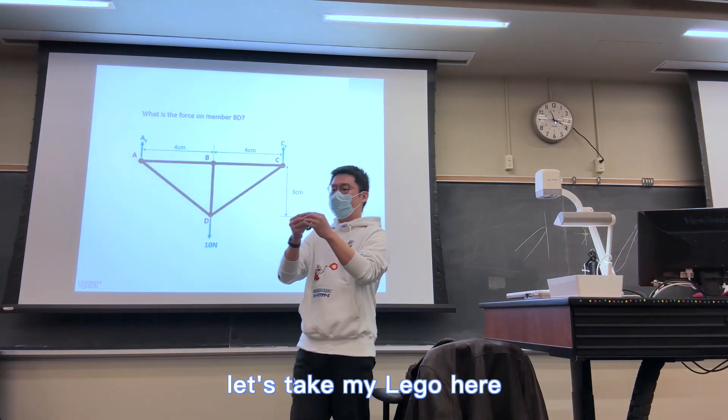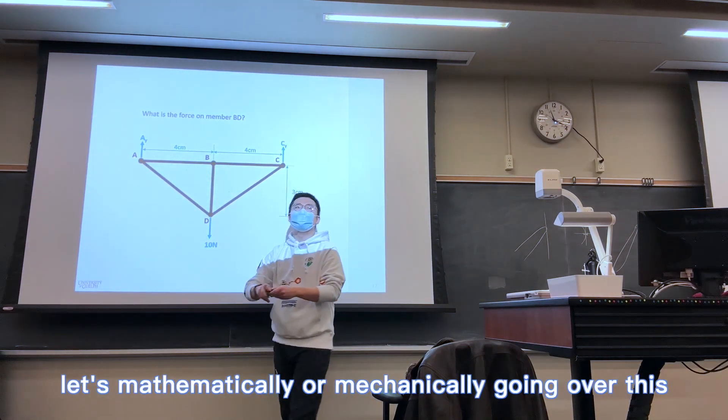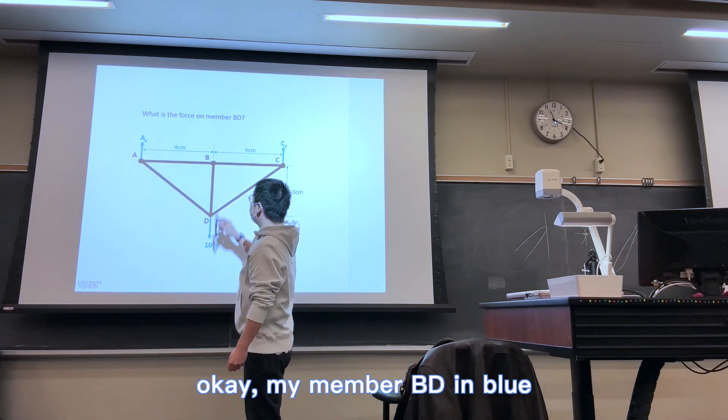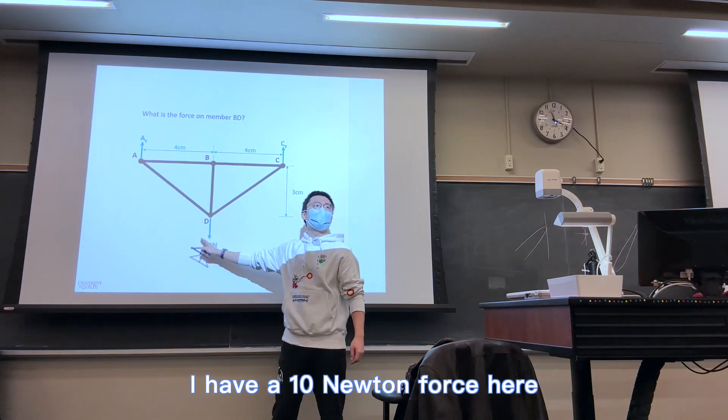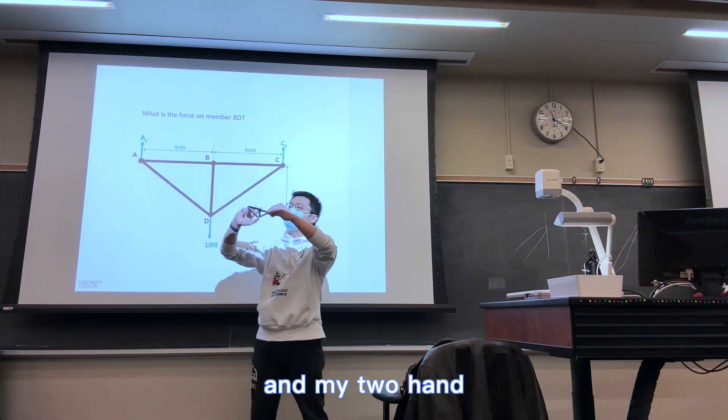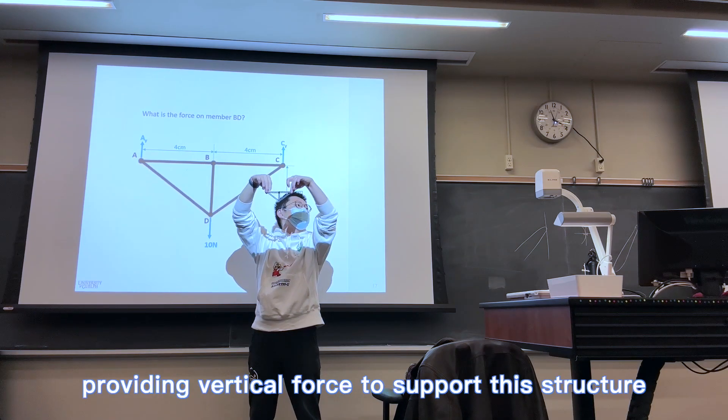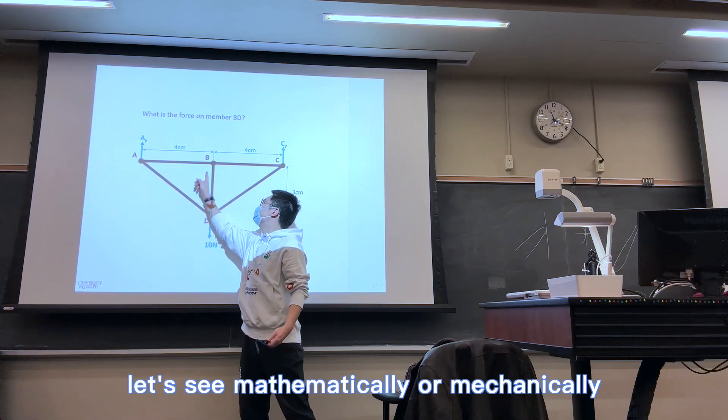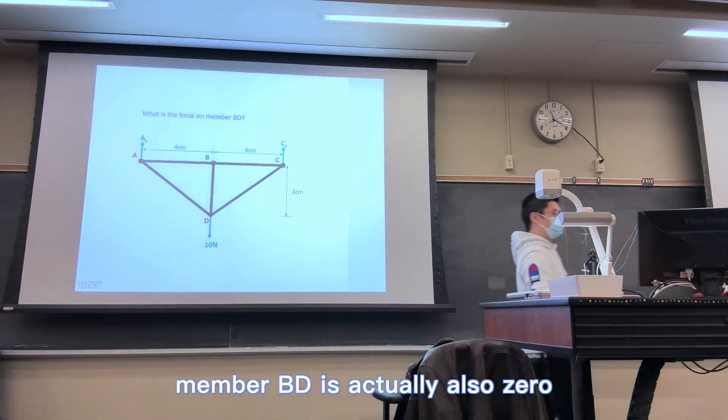Let's take my Lego here. Let's mathematically or mechanically go over this. Okay? My member BD in blue, I have a 10-Newton force here as a weight, one kilogram water bottle, and my two hands providing vertical forces to support this structure. Let's see, mathematically or mechanically, member BD is actually also zero.